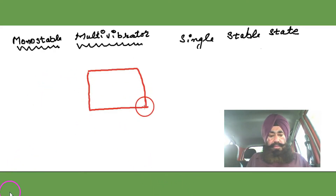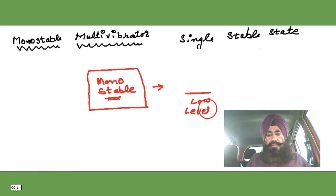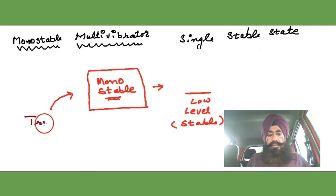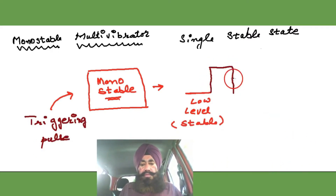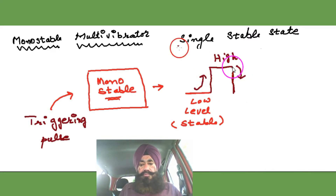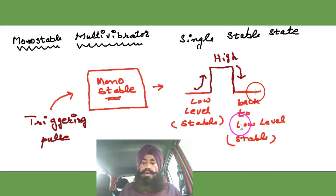So this is a monostable, and this is a low level — it is the stable state. We are giving a trigger pulse, and with the help of the trigger, it is going from low to the high level. But just after a short time, it comes back to the low level, which is the stable one.